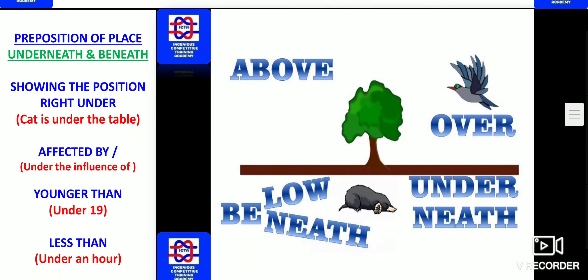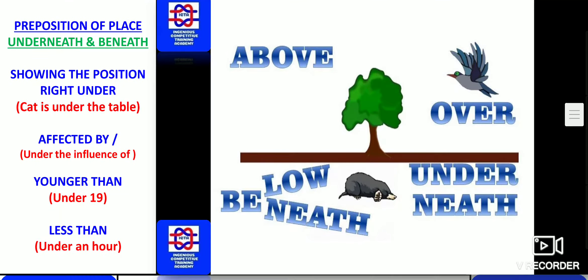Here we have preposition of place: underneath and beneath — and the way how we use them. Showing position right under: the cat is under the table, which is showing the position directly below. Affected by: under the influence of — can be used in the sense of being affected by something. Younger than: under 19. Less than: under an hour. You can see over and above, below, beneath, and underneath — how exactly each has been used.